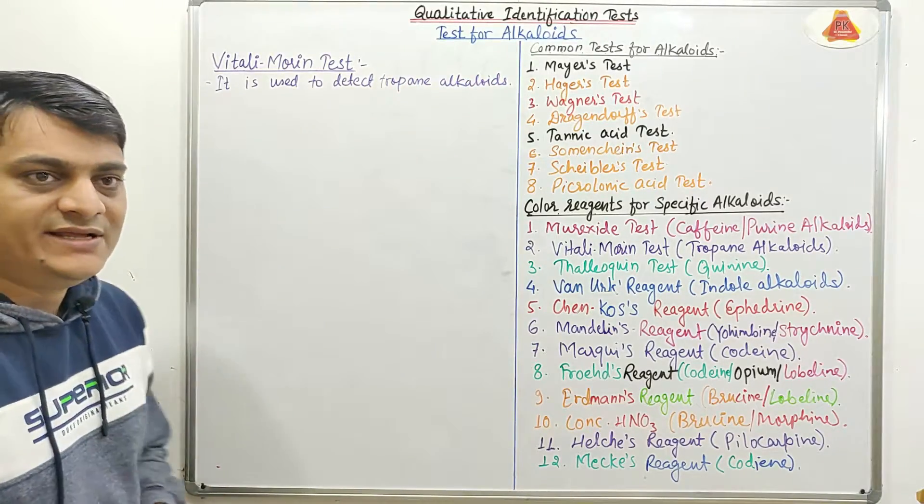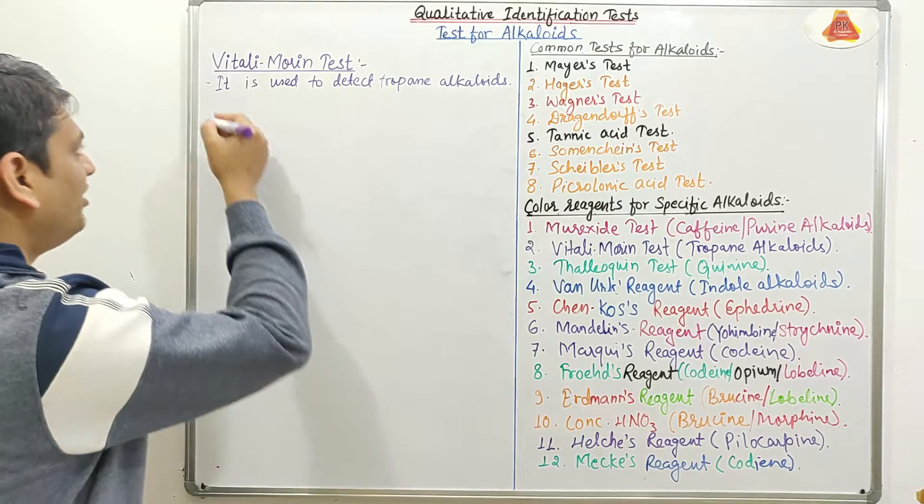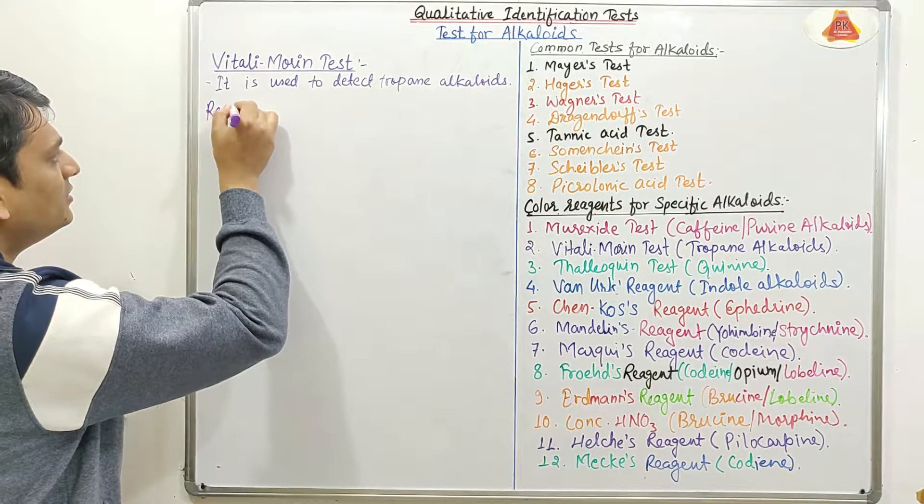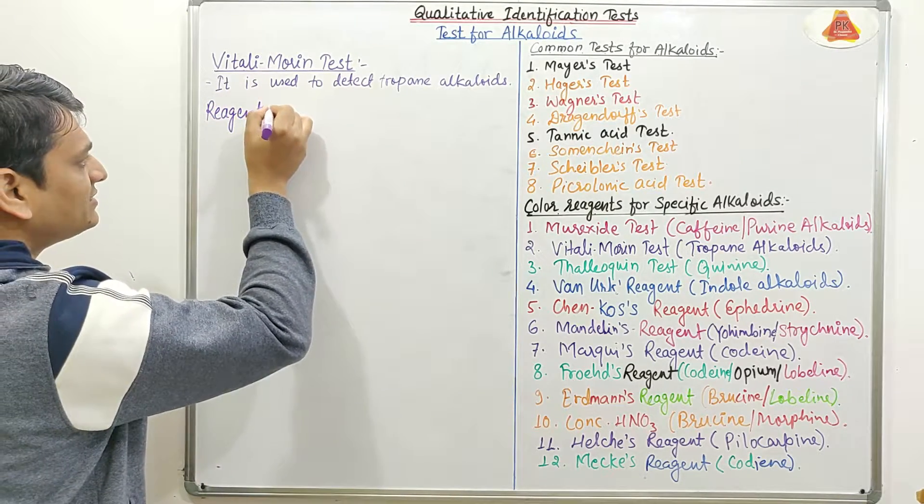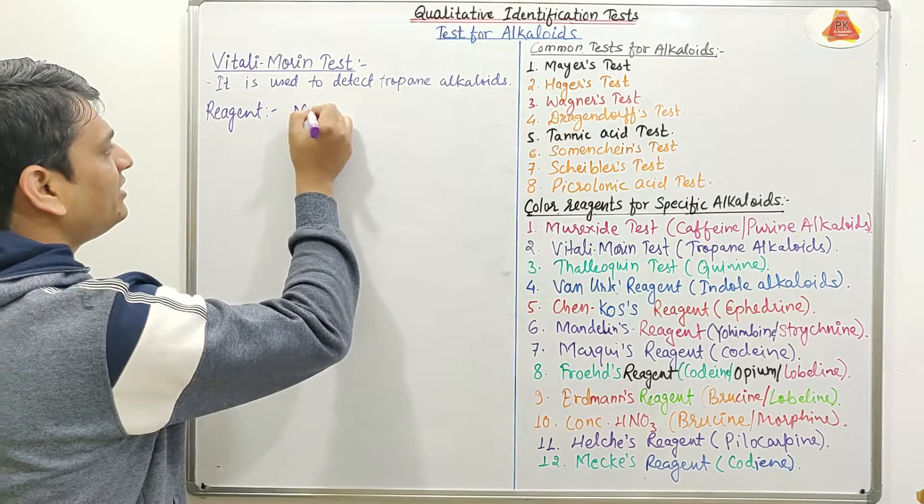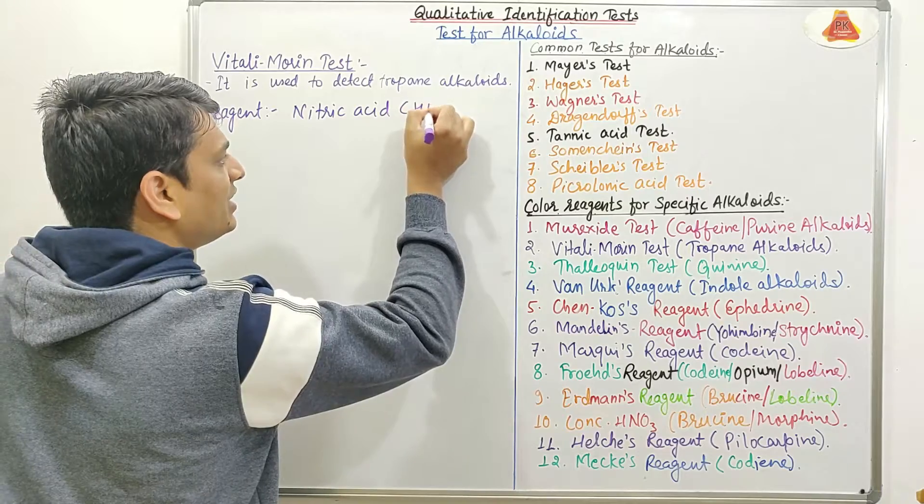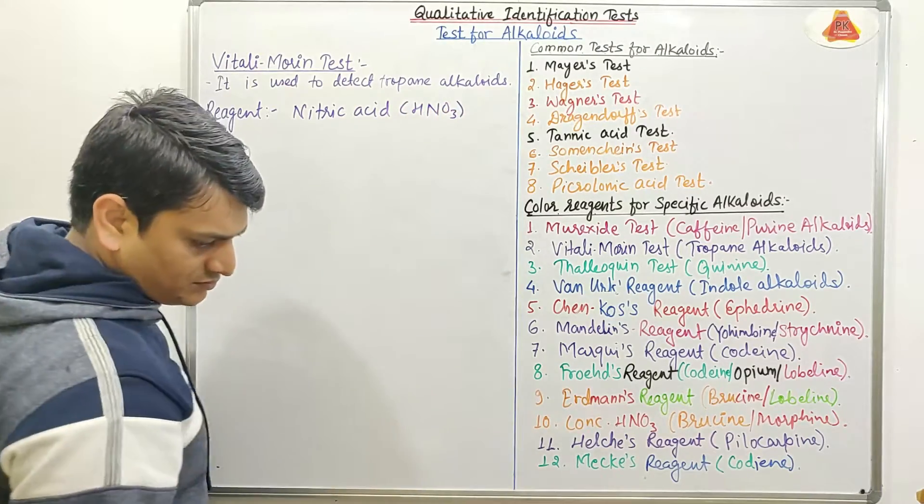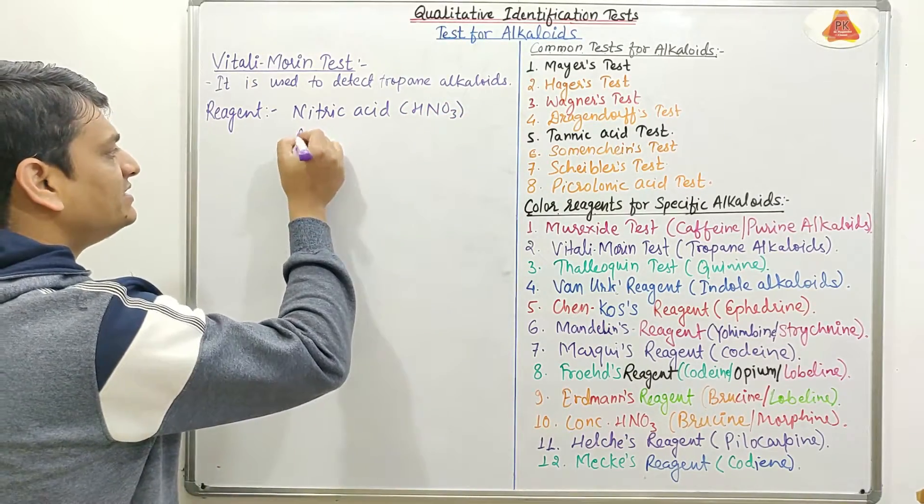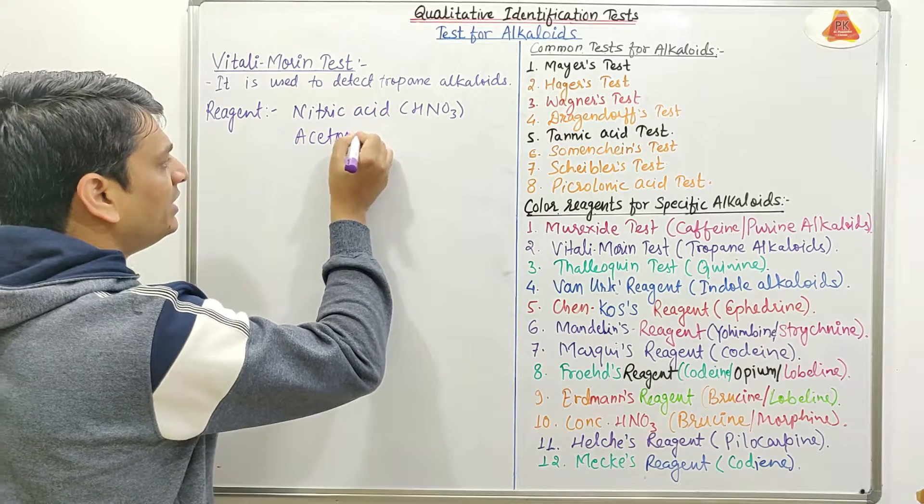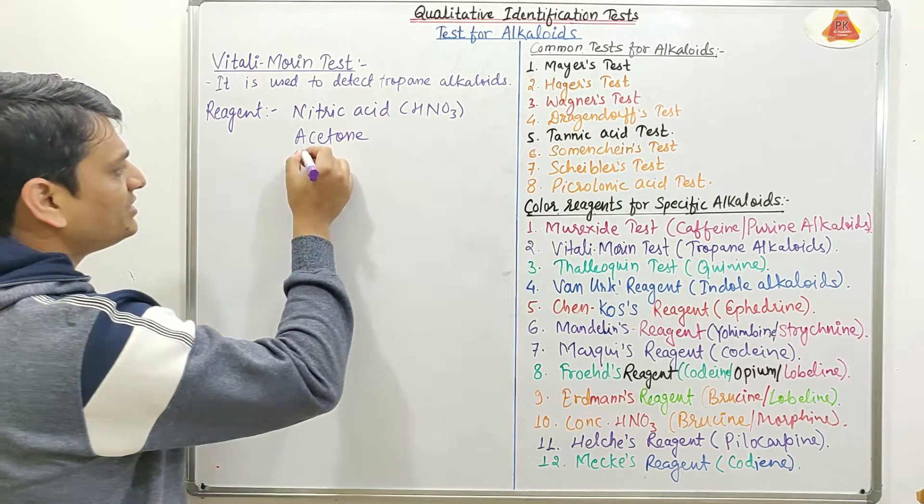So this Vitali Morin test is used to detect tropane alkaloids. Now coming to the reagent used in Vitali Morin test. So first one is nitric acid, alkaloid that is HNO3, second one is acetone and the third one is alcoholic KOH.